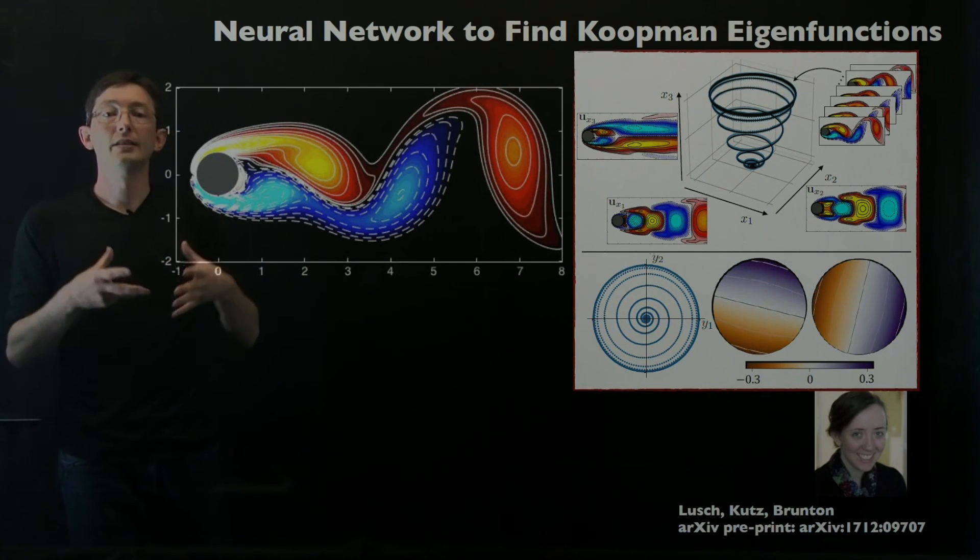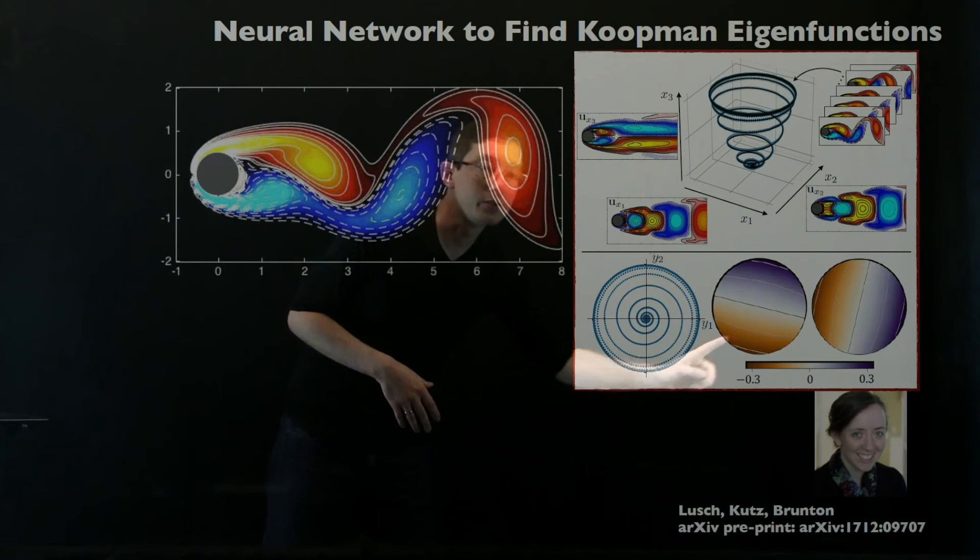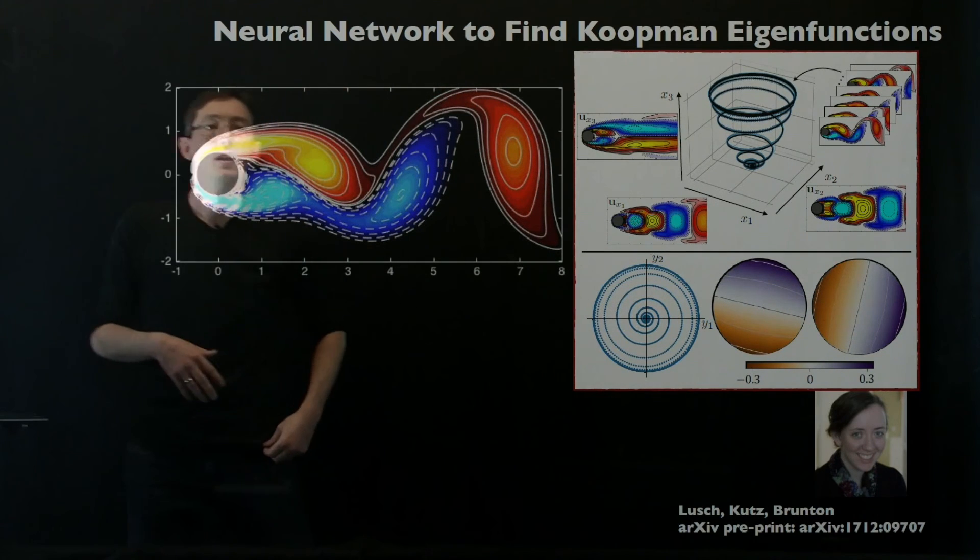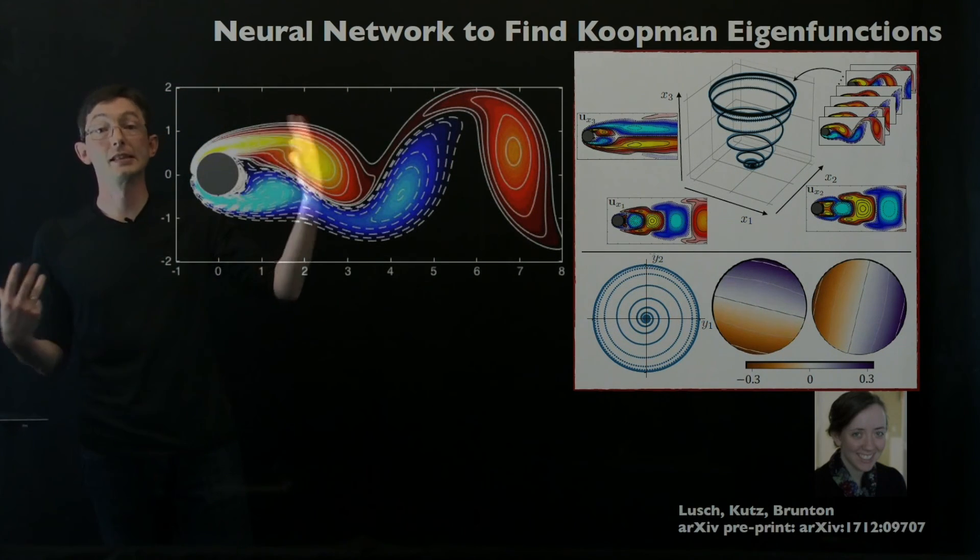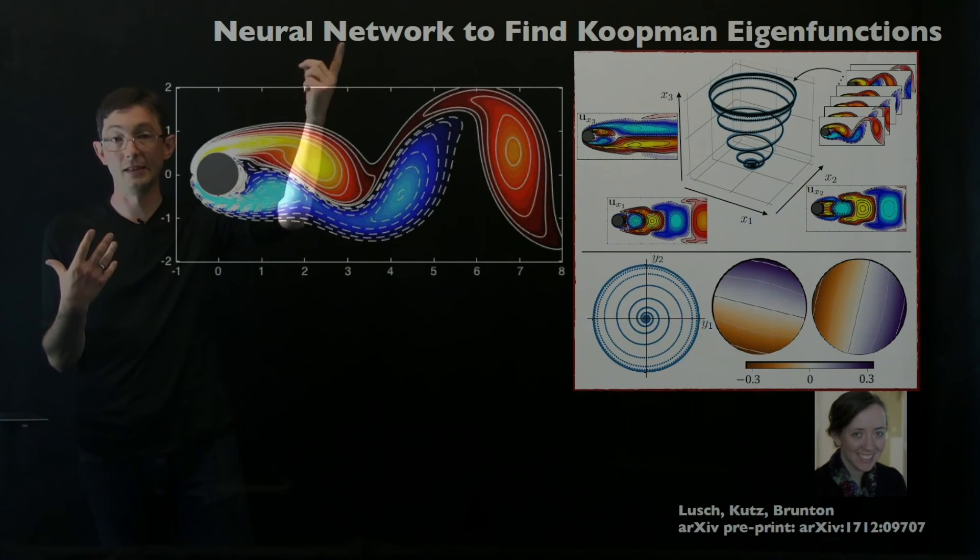She's also applied this to more rich systems like the flow past a cylinder, which also has this continuous deformation of my eigenvalues as I increase or decrease the energy level of the system. She finds these eigenfunctions here that map me into a linear coordinate system. So it's nice. This method scales because it is relying on the power and flexibility of this deep learning architecture.